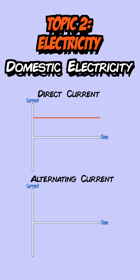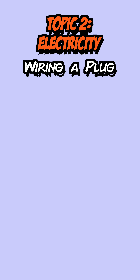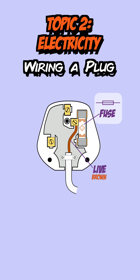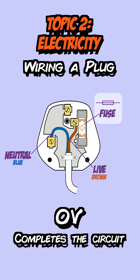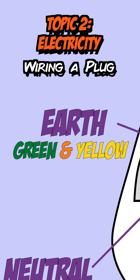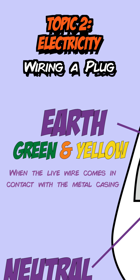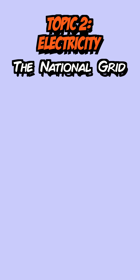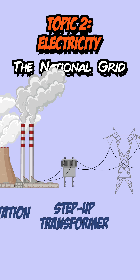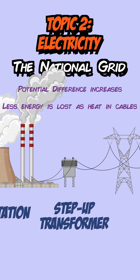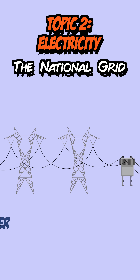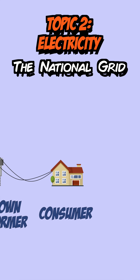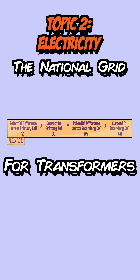For domestic electricity, you need to know the differences between direct current, which flows in one direction, and alternating current, which always changes direction. Alternating current is used in the UK mains supply, which is 230 volts and 50 hertz. Plugs used in mains electricity contain a three-core cable: a brown live wire carrying 230 volts, a blue neutral wire which completes the circuit, and a green and yellow earth wire for safety — used when a fault causes the live wire to contact the metal casing of an appliance. Electrical power can be found using three equations. Finally, in the national grid, electricity from a power station passes through a step-up transformer to increase its potential difference, reducing energy lost as heat in cables. It is then distributed around the country and goes through a step-down transformer for safety before reaching your home.